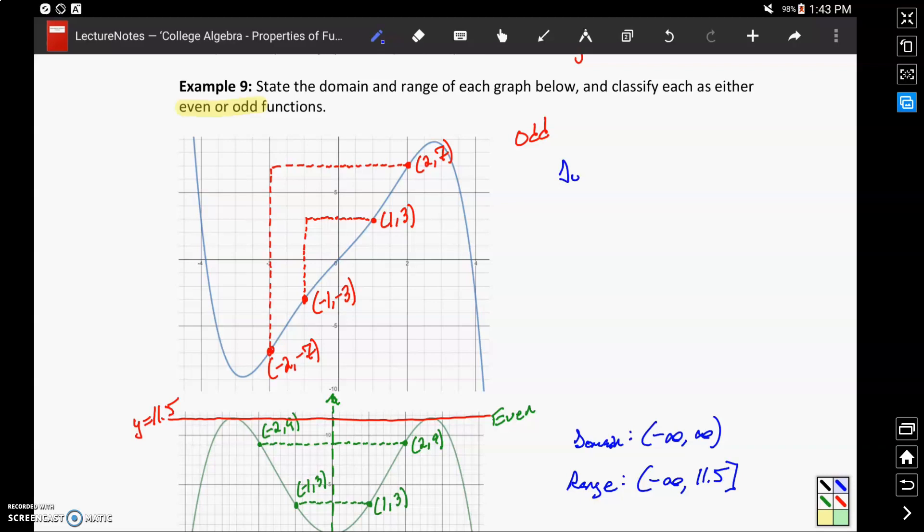We can identify the domain, in this case, as negative infinity to infinity. And our range, since our function is increasing on one end and decreasing on the other, will also be negative infinity to infinity.